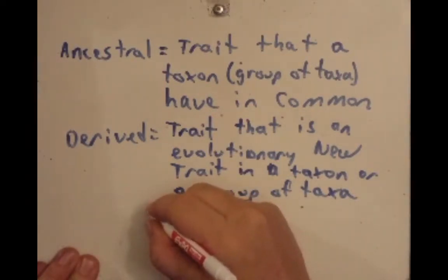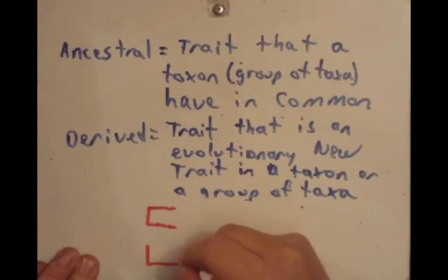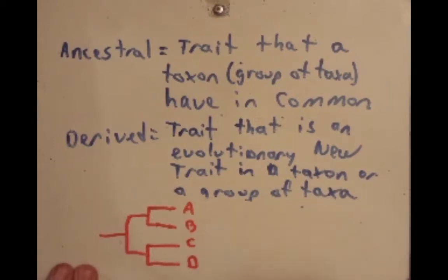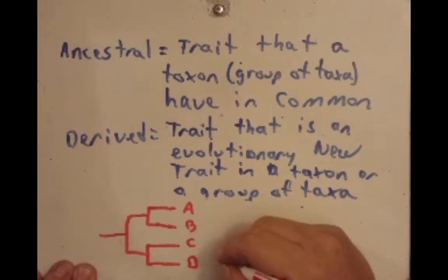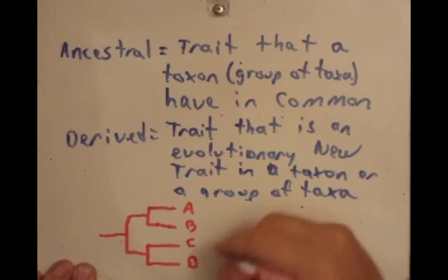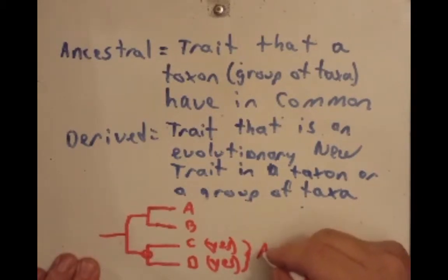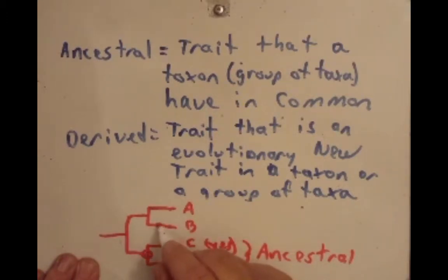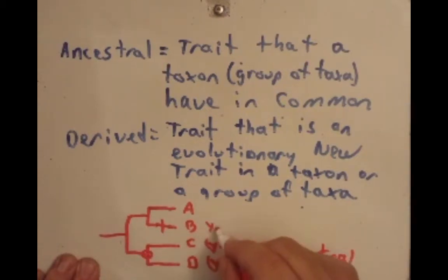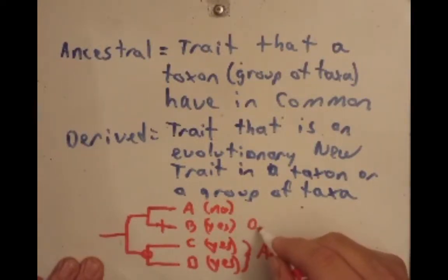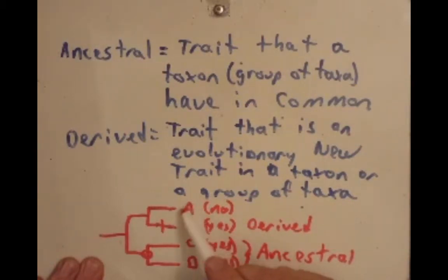Let's draw a simple cladogram to explain this, where we have taxa A, B, C, and D. Let's say both C and D share a trait — we say it's an ancestral trait. Now for a different example, let's say there's another trait that B has but A does not. We say then that B has derived this trait since the common ancestor, so we call it a derived trait. That's because the same member of its taxa group does not have the trait.